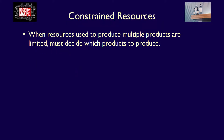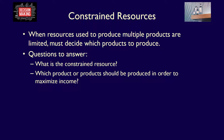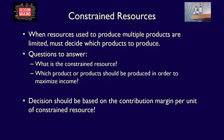When resources used to produce multiple products are limited, the company must decide which products to produce. They do this by asking themselves: What is the constraint — the limited resource — in this company? Of the products which use the limited resource, which products should be produced in order to maximize income? This is determined based on the contribution margin per unit of the constrained resource. Management wants to ensure the company's operating income is as high as possible, and to do that, they have to ensure they produce or sell the products with the highest contribution margin.